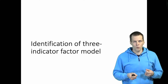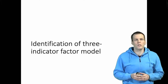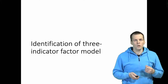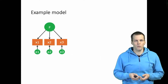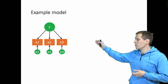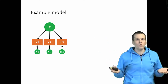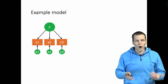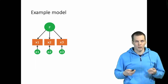Identification proofs can be a bit tedious, but understanding the principle is nevertheless useful. I will show you now how to prove the identification of a factor model with three indicators. Here is our model: we have one factor, three indicators, and a rule that this model is always identified. But why is it always identified, and how do we prove the identification status?